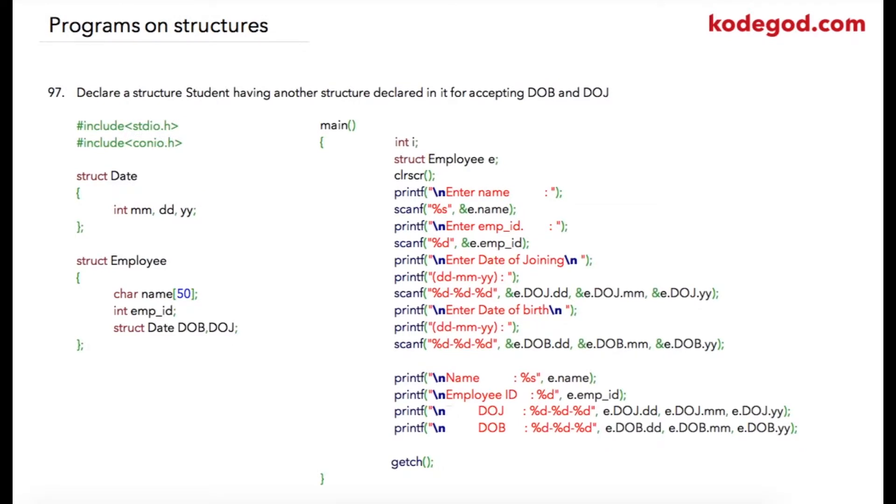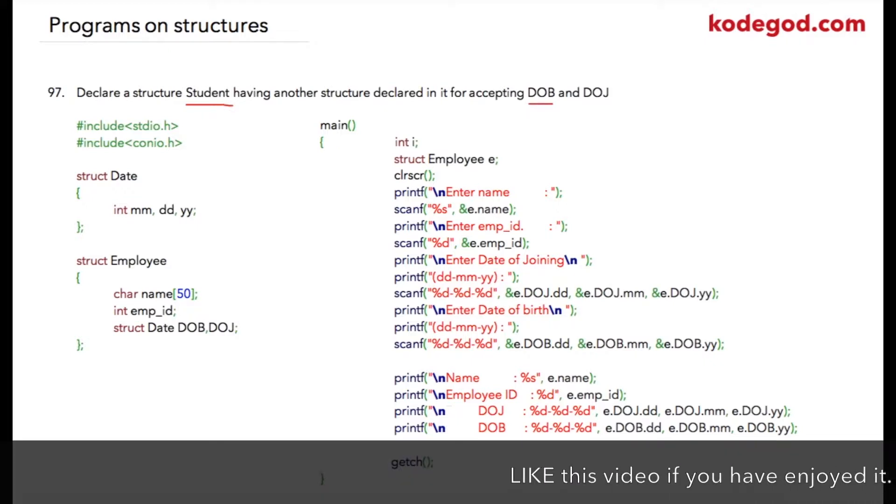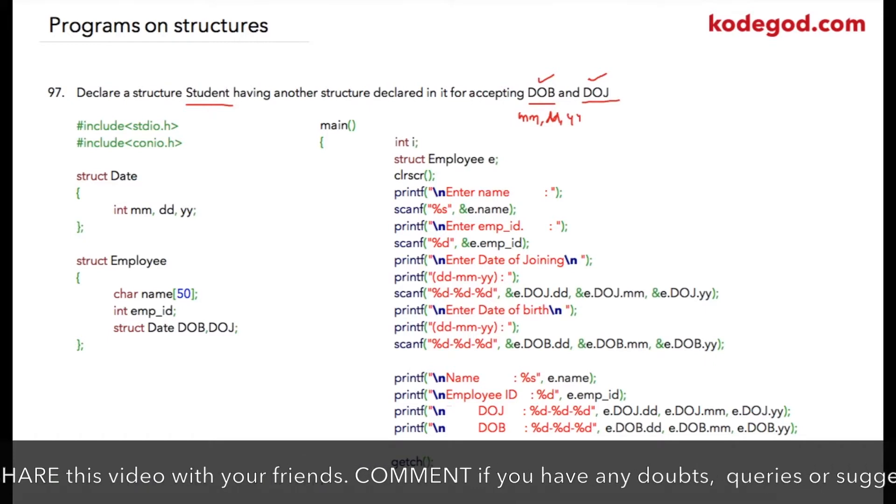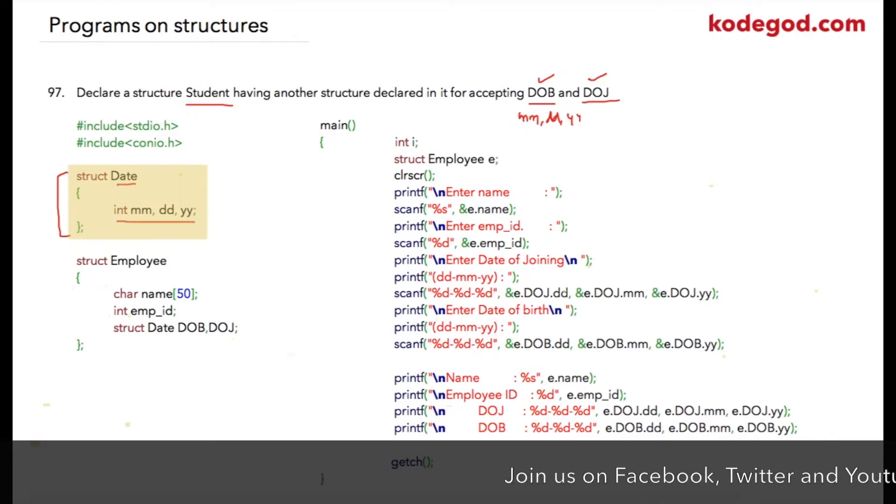Let us take one example to understand this concept better. In this program we will declare structure name as Student, and inside of this structure variable we will have another structure as DOB and DOJ - that is Date of Birth and Date of Joining - which is in date format. We will require month, date, and year as three variables to specify a date. I am using a structure as struct Date; inside it I have these three integer variables mm, dd, and yy.